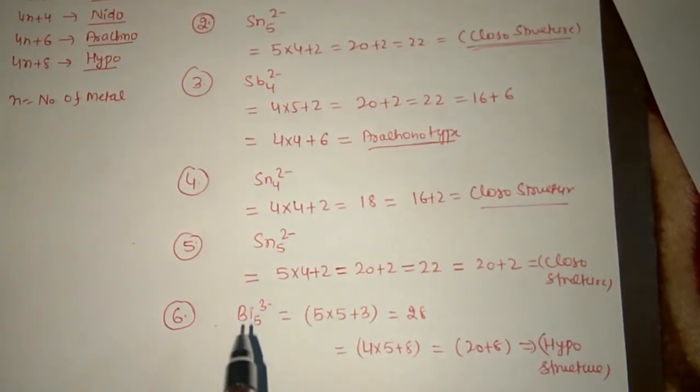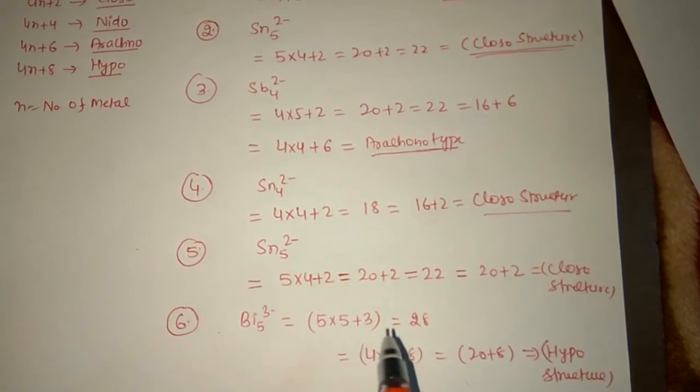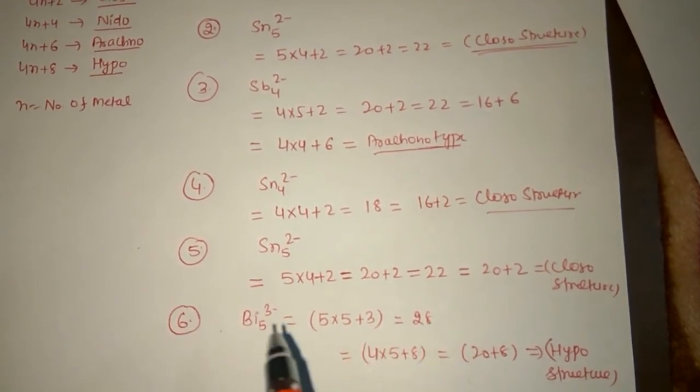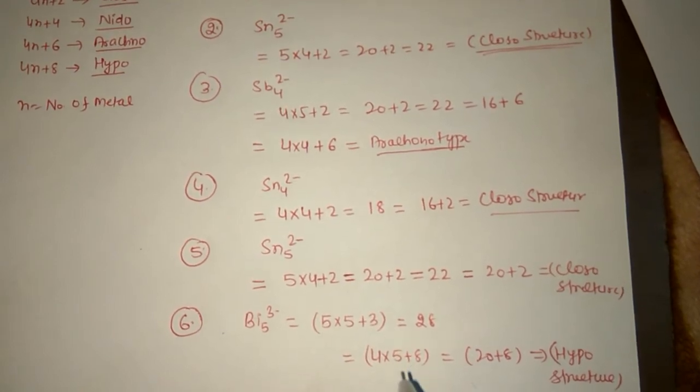Similarly, we can write Bi5^3-: that equals 5×5+3=28. Can we write 28 as 4×5+8? So it is 4n+8.